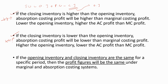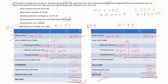If the opening inventory and the closing inventory are the same for a specific period, then the profit figures will be the same under marginal and absorption costing systems. This means the business was able to sell all its production units during the year, so opening and closing inventory will be the same. You can change these inventory levels and recalculate this example again to understand these points. You can go to semaselfstudy.com and download the study note for this video.